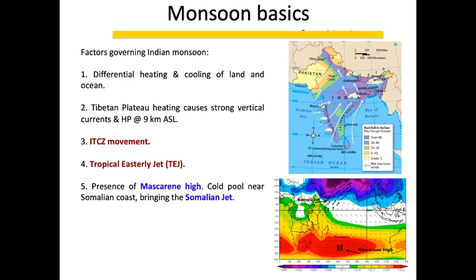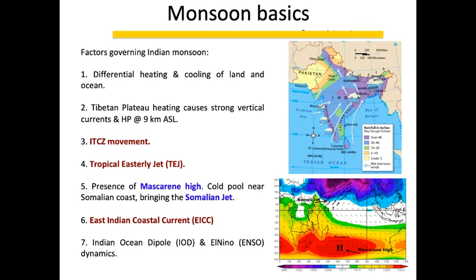Because of the Tibetan plateau heating, the Somali jet is pulled towards the Indian landmass. It's a jet phenomenon — a very strong wind flow — that brings in a lot of westerly moisture flux towards the Indian subcontinent. We also have the East Indian Coastal Current (EICC) in the Bay of Bengal, moving south to north, creating an anticyclone over the ocean and maintaining above-normal Bay of Bengal temperatures so that systems can be produced.